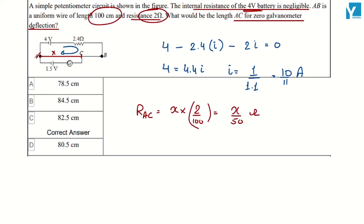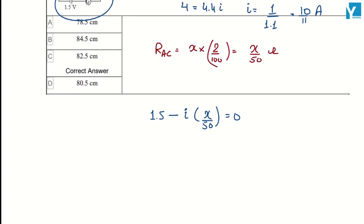Finally we want to know that the voltage with the battery balance 1.5 voltage minus i into r, x by 50, this is equal to 0. We know our current, how much? 10 by 11.